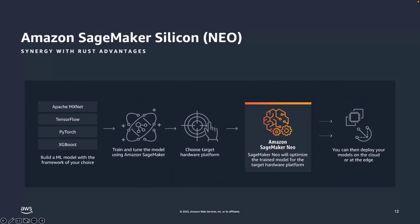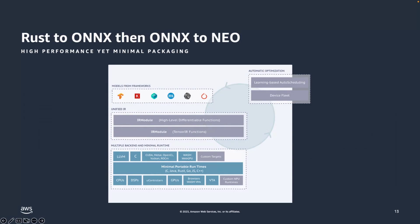It's important to talk about Amazon SageMaker Silicon, or Neo. What's important about this is that you can actually build and train models targeted for a specific hardware platform and get optimized performance. In particular, one interesting story is that you build a model with Rust, convert it to ONNX, and then ONNX can go to Neo. So you have this great story with open-source frameworks from Apache that directly integrate with Amazon SageMaker.